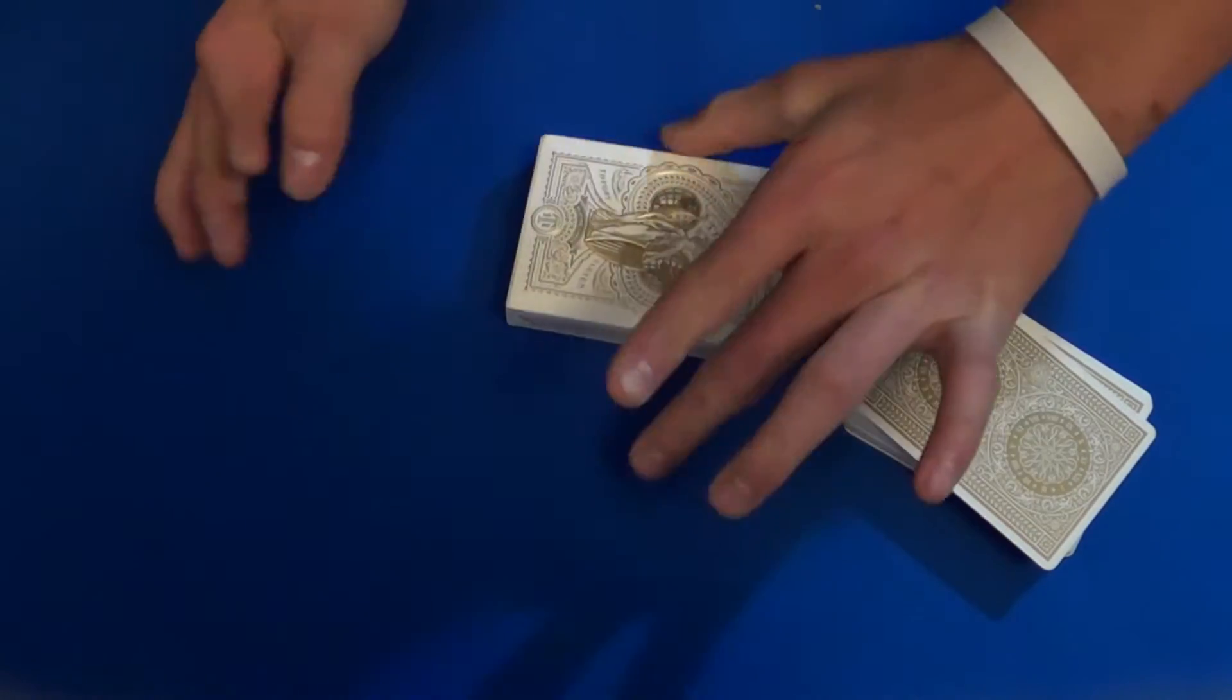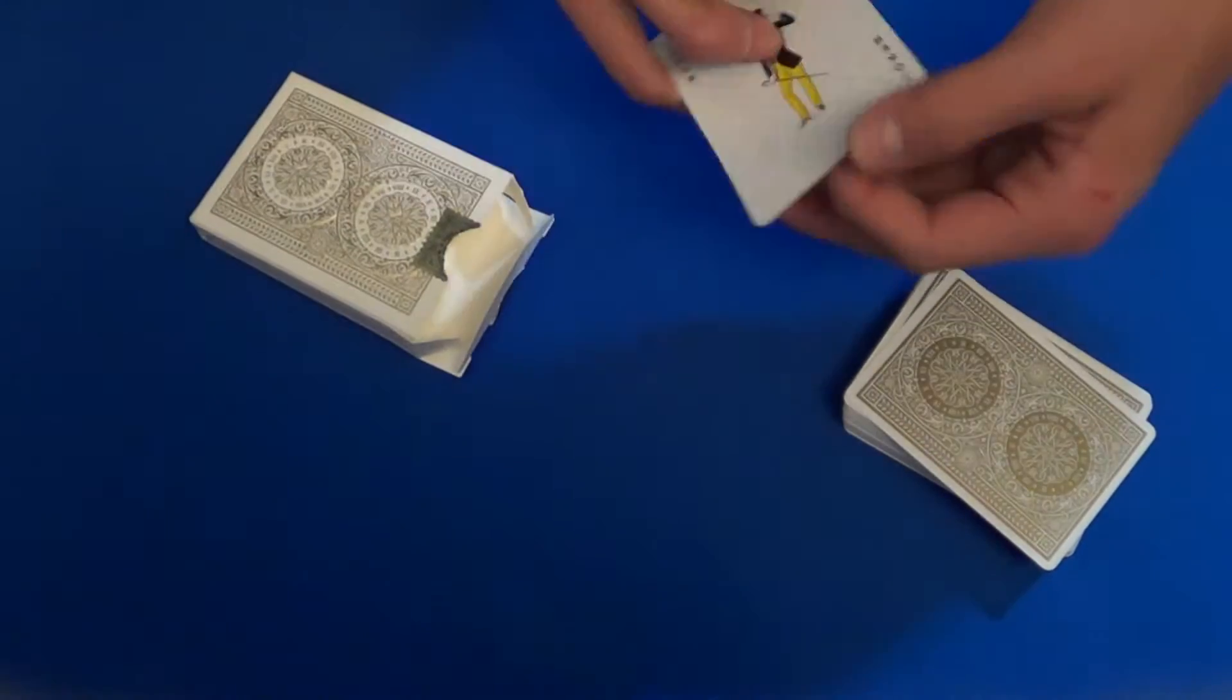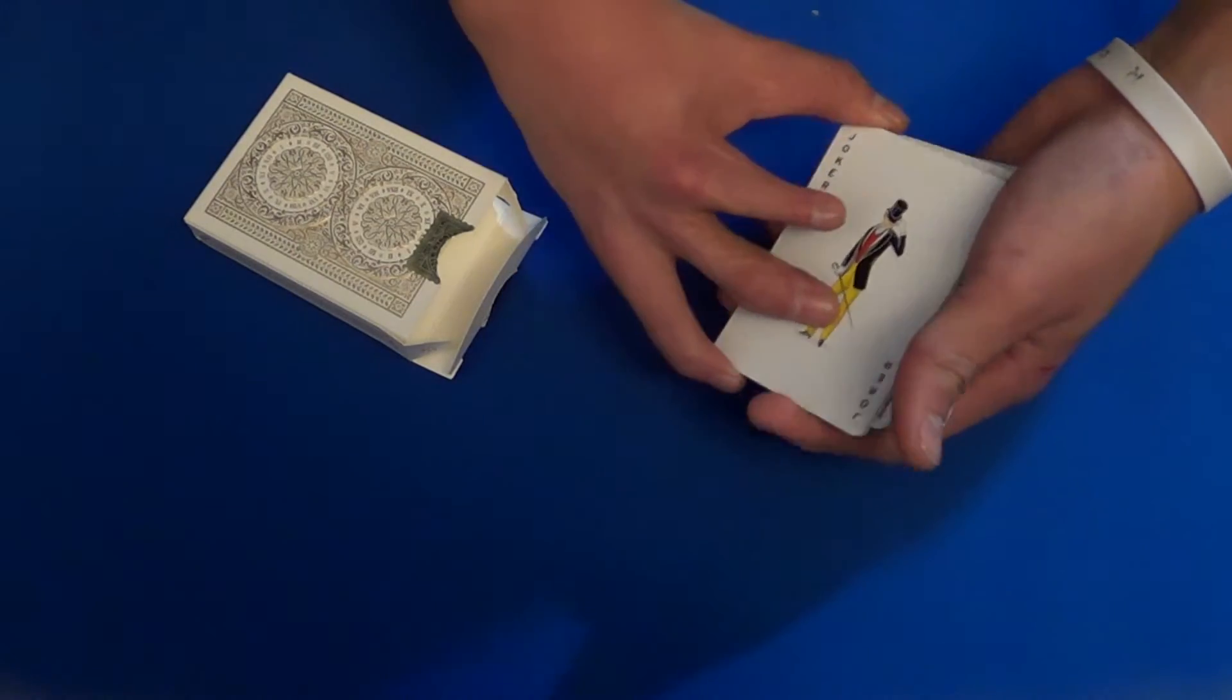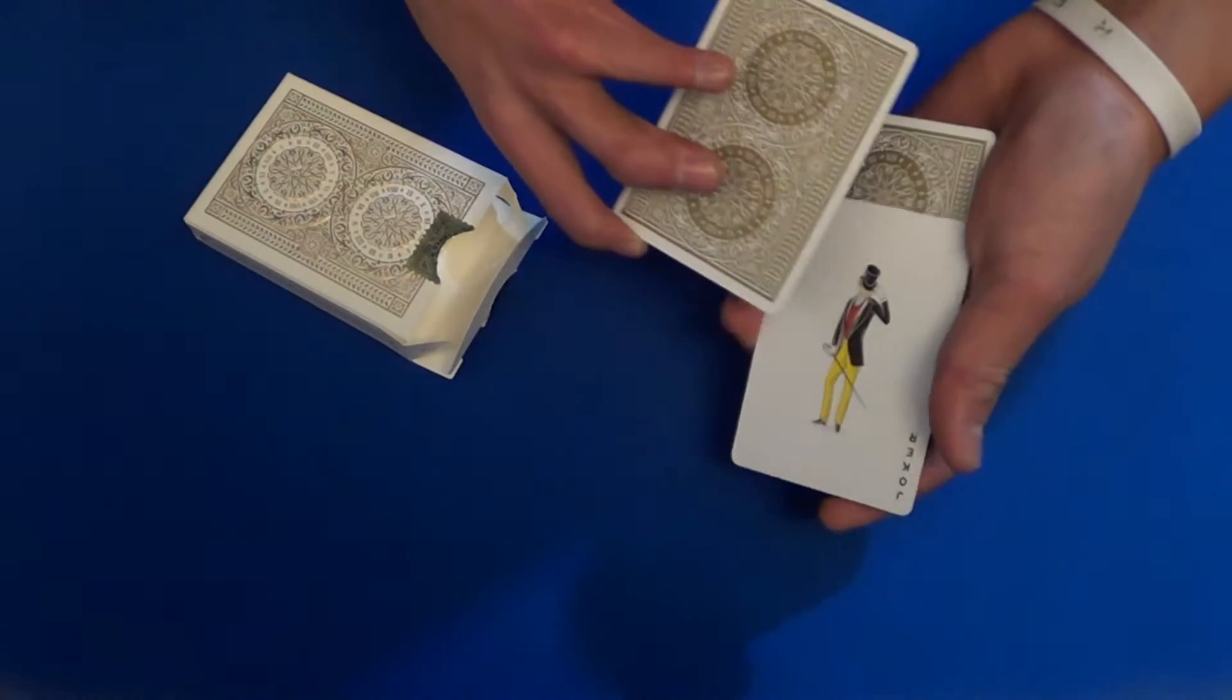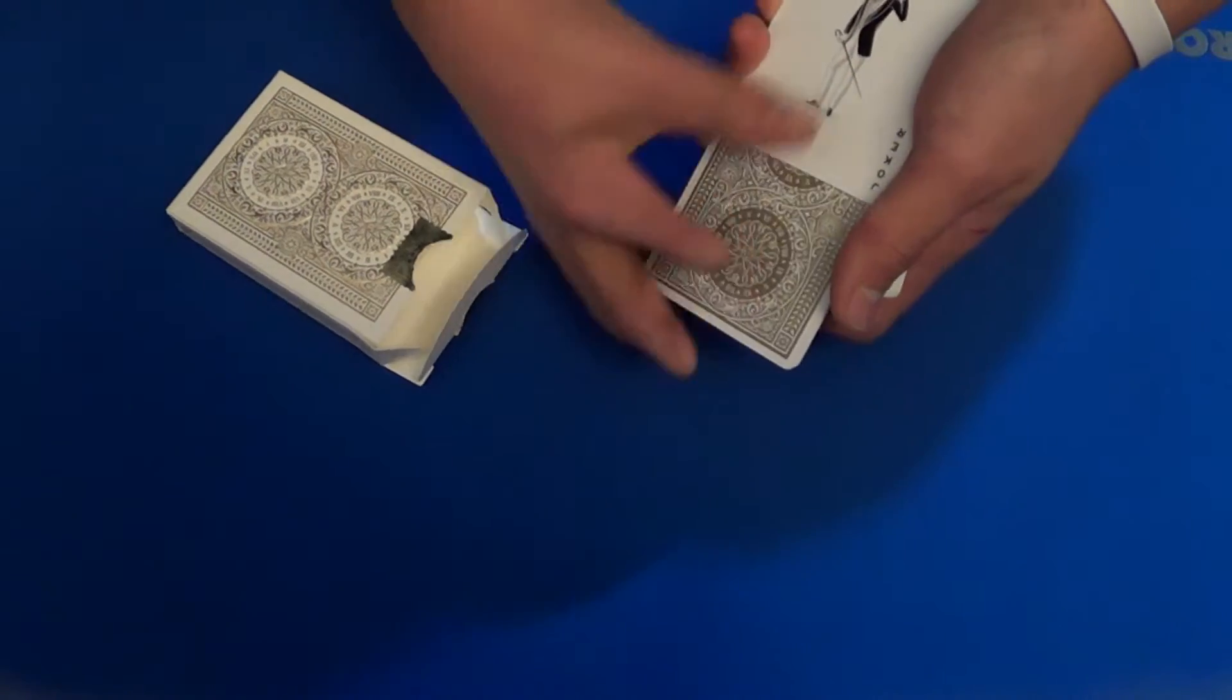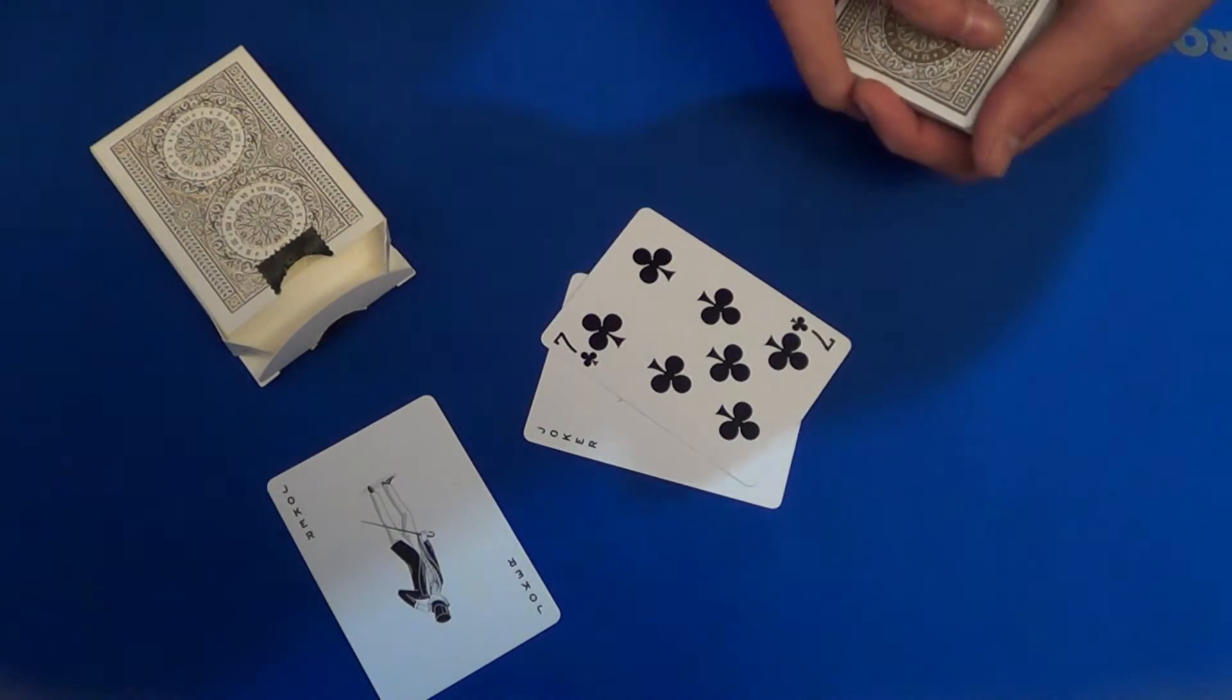If we snap our fingers, wave our hand over the pack, you'll actually see, I think, if I'm not mistaken, I think the jokers have actually, I think they sandwiched a card. Now they've sandwiched one card here. Wouldn't that be amazing if it was the seven of clubs? Let's see here. We'll pull it out, and you'll actually see it was the seven of clubs.